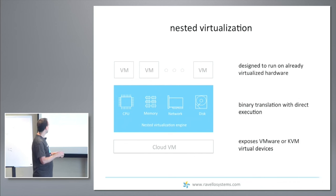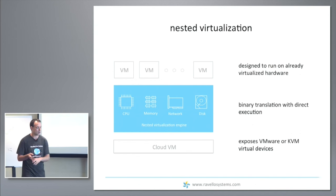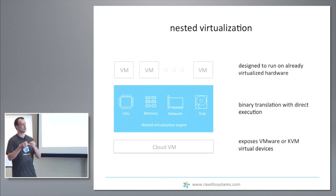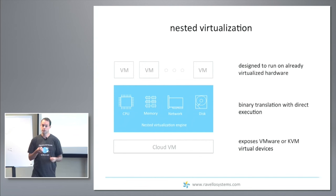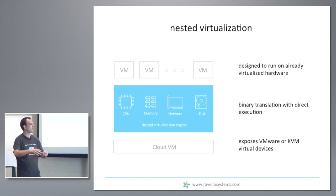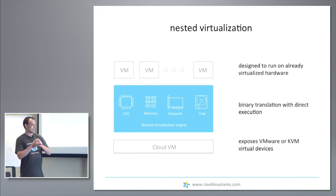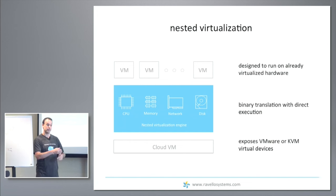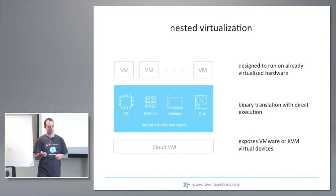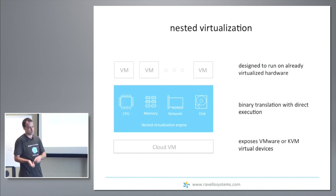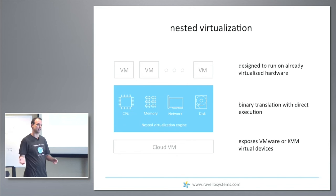The first core technology is HVX, our nested hypervisor designed to run on already virtualized hardware. There are different techniques to implement a hypervisor. Most hypervisors today rely on hardware features such as Intel VT and AMD SVM instruction sets. The problem is that this hardware support is not available in any of the public clouds today. Another technique, popular in the past, was paravirtualization, where guest VMs are aware they're running on top of a hypervisor — that's what Xen did.